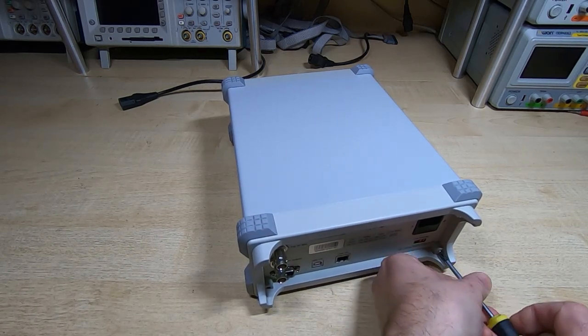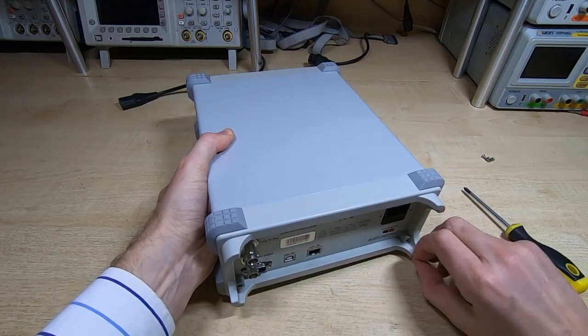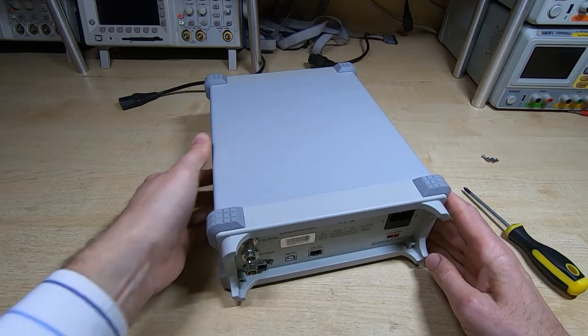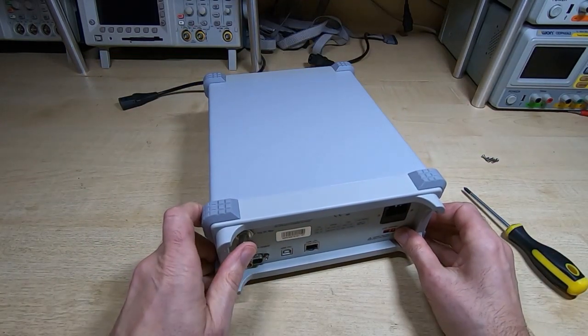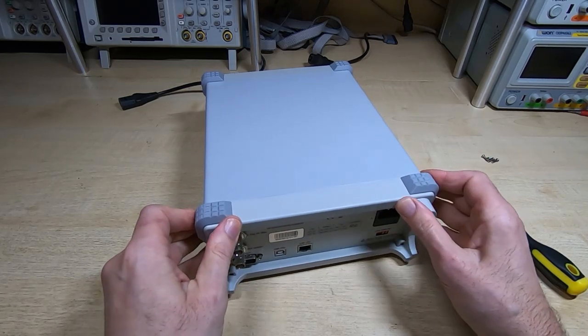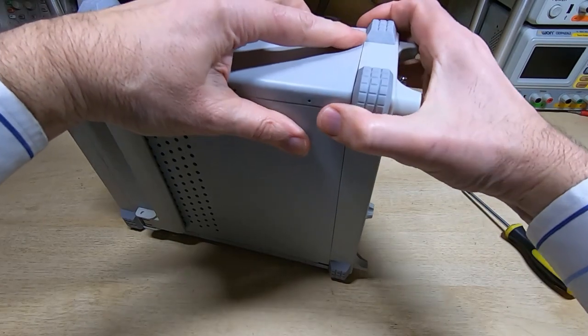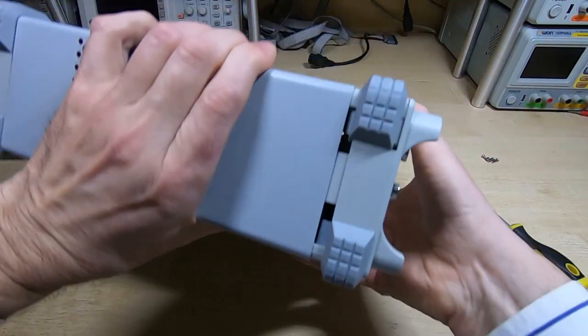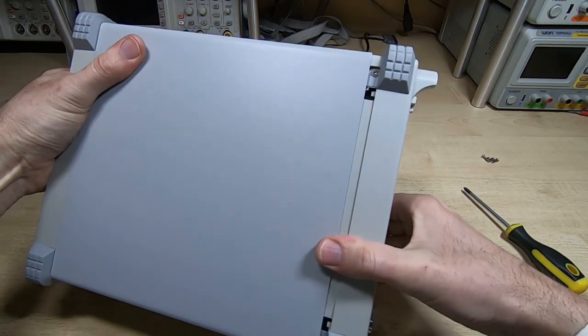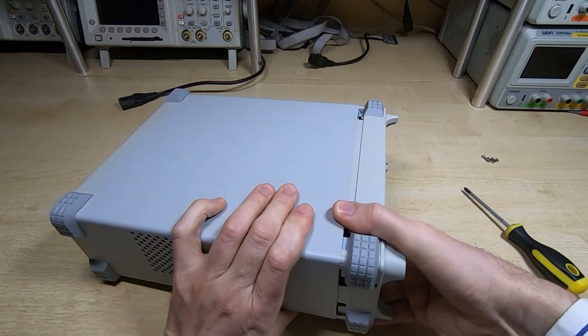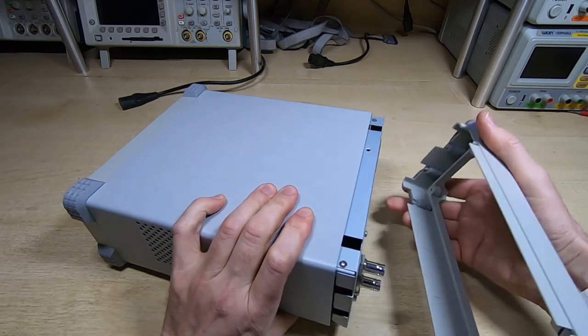Okay, so that's the four screws taken out of the back. It doesn't seem to want to come out, it may just be tight. Okay yeah so it's just a tight fit in there, so it's quite a good fit. It's a testament to the build quality, the plastic molding is a very good fit in the metal case, which is always a good sign.